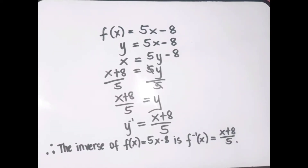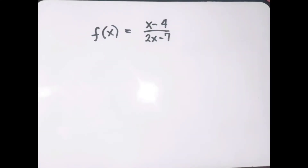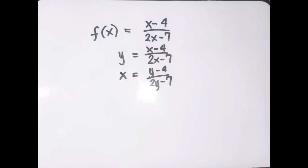Therefore, the inverse of f of x equals 5x minus 8 is x plus 8 over 5. Our second example is f of x equals x minus 4 over 2x minus 7. The first step is to change f of x to y: y equals x minus 4 over 2x minus 7. Then interchange x and y variables.